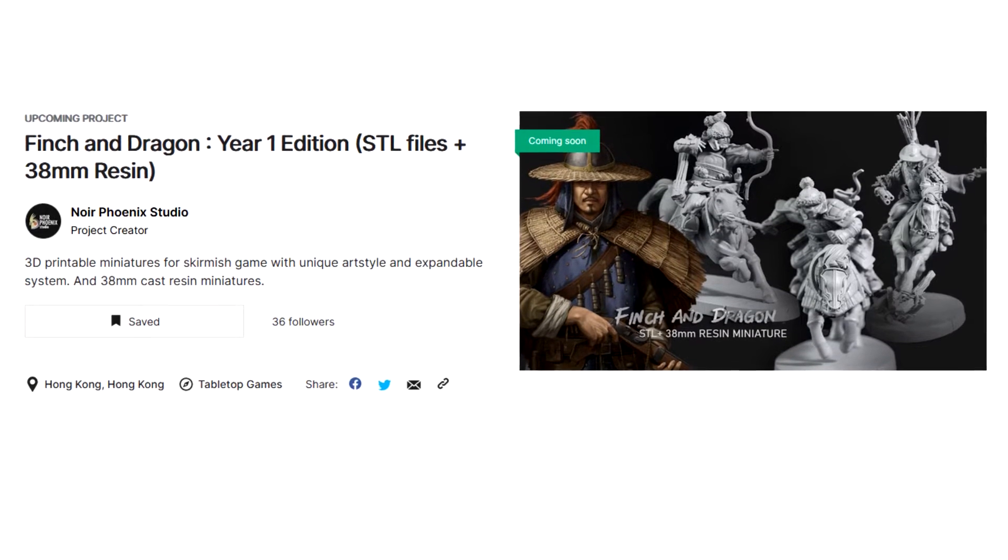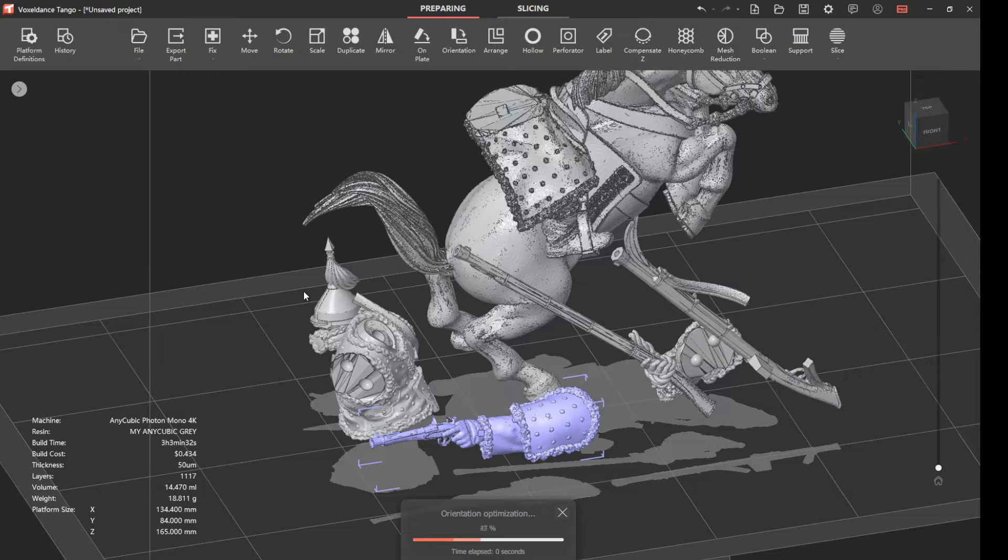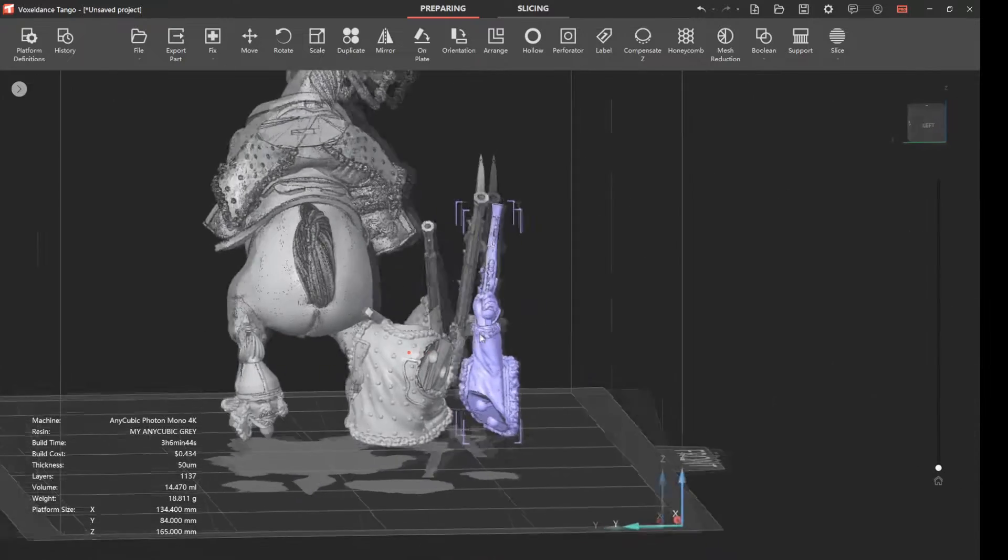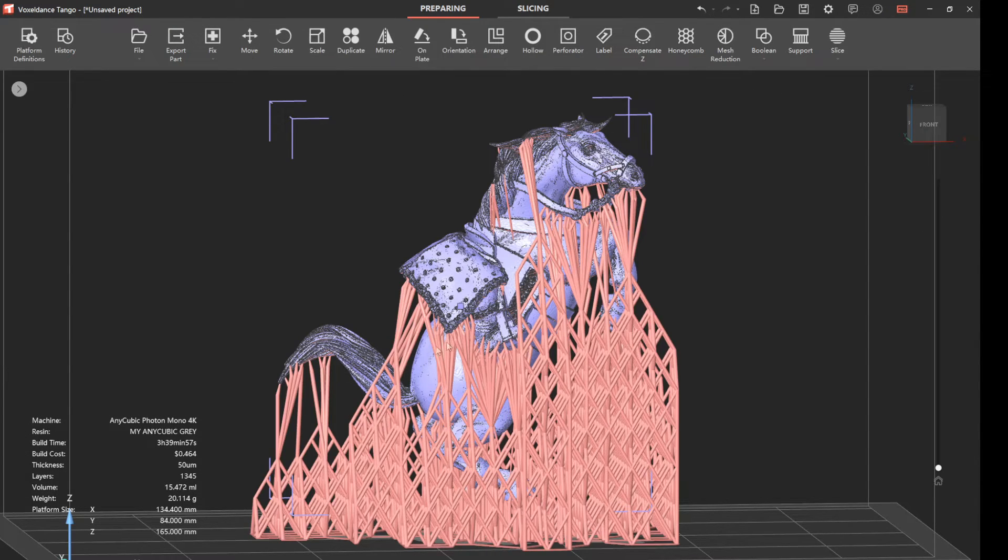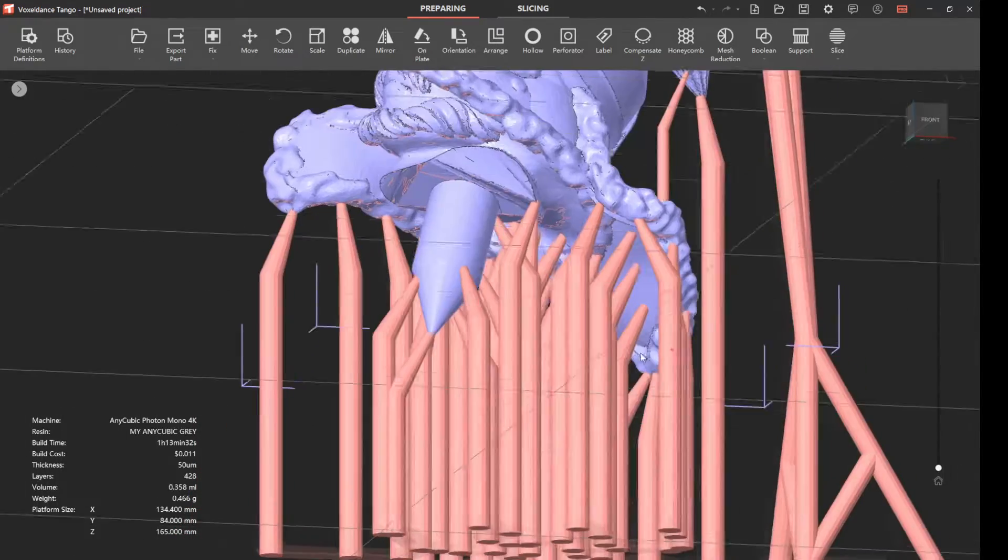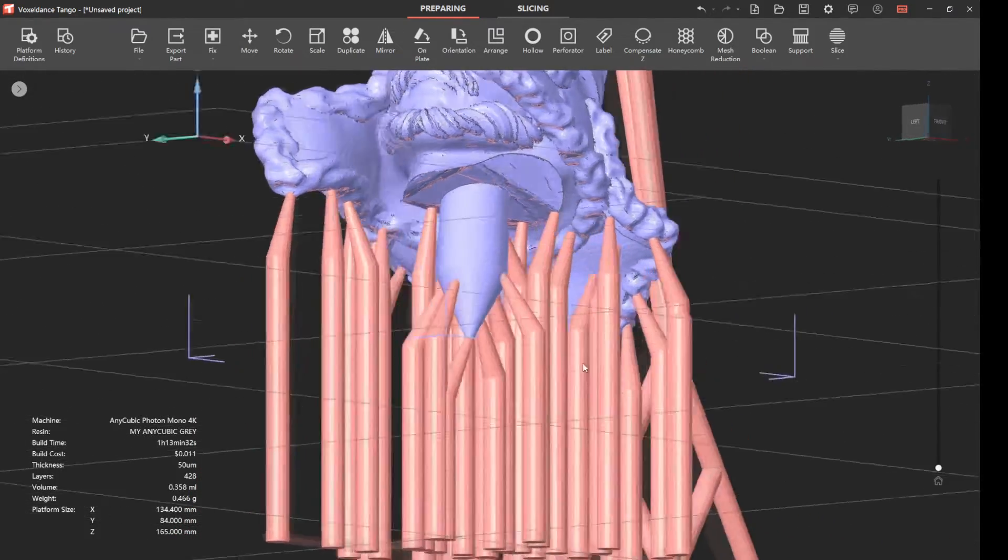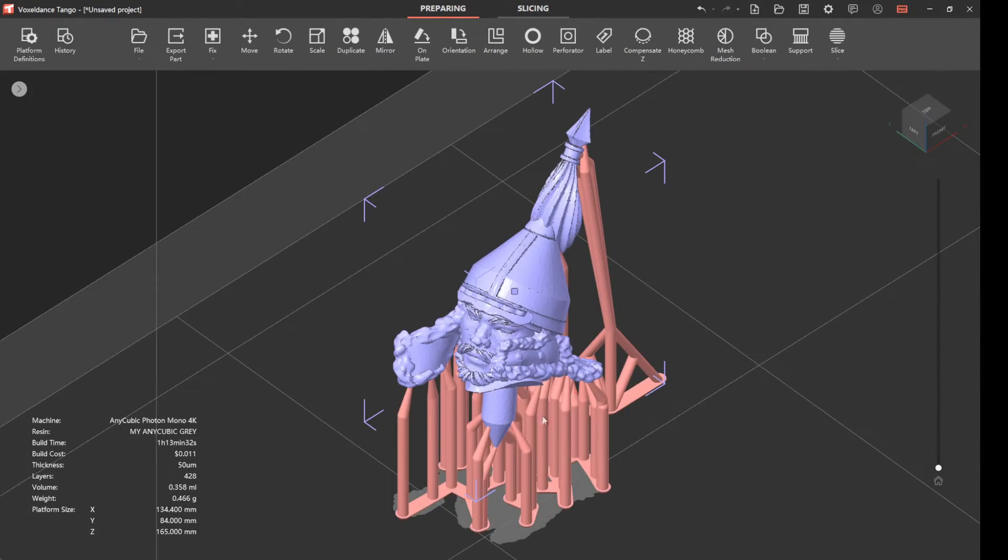Let's take one of these models from the upcoming Finch and Dragon Kickstarter campaign, who are part of this collaboration, and see how well Tango slicer can automatically support each part. Wow, that is insanely good for literally just clicking a button. If I need to, I can adjust the supports, I can add and remove them, but looking around, I literally don't see a need.